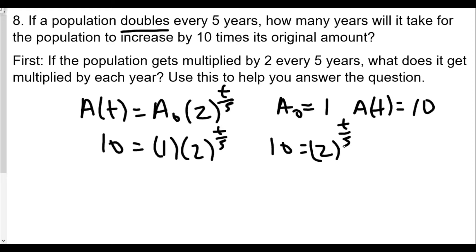Right? So 5 years, if t was 5, we double once. If t was 10, we double twice, we get 4 times. But to get 10 times, since 10 is not a multiple of 2, we have to use logs.